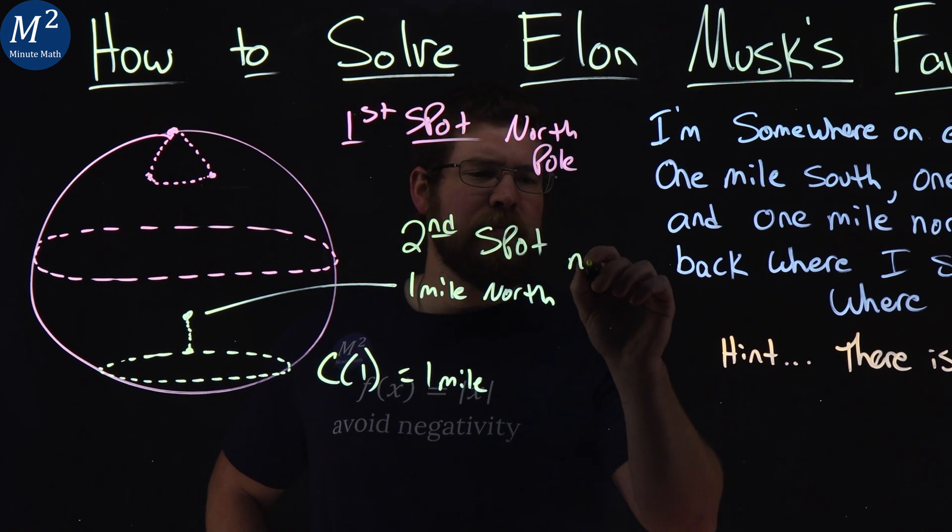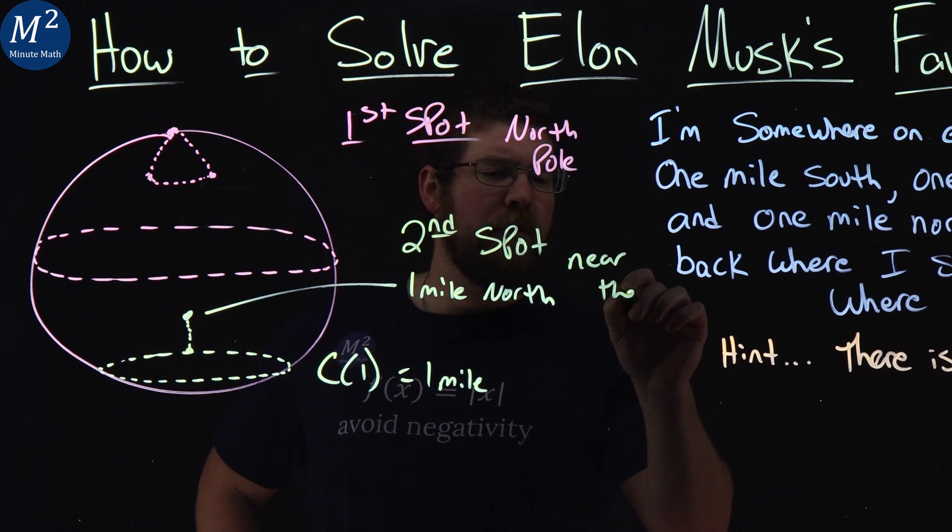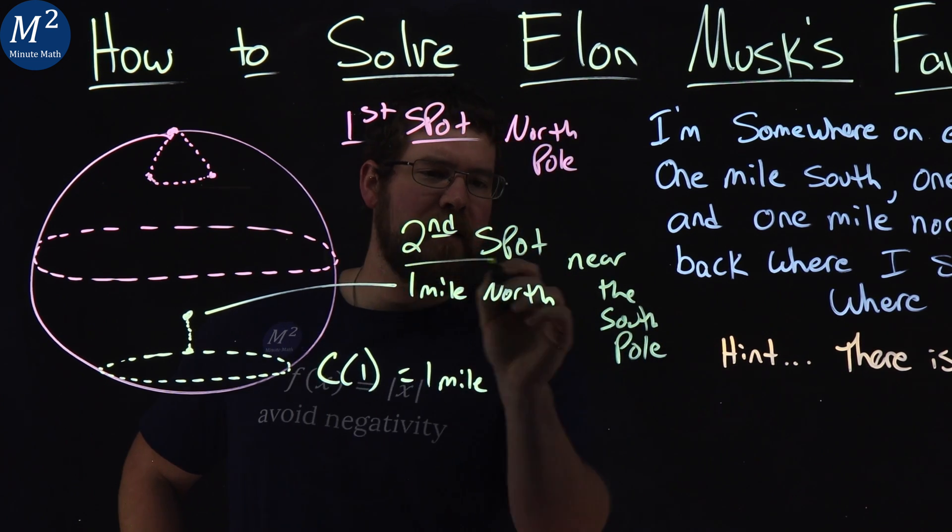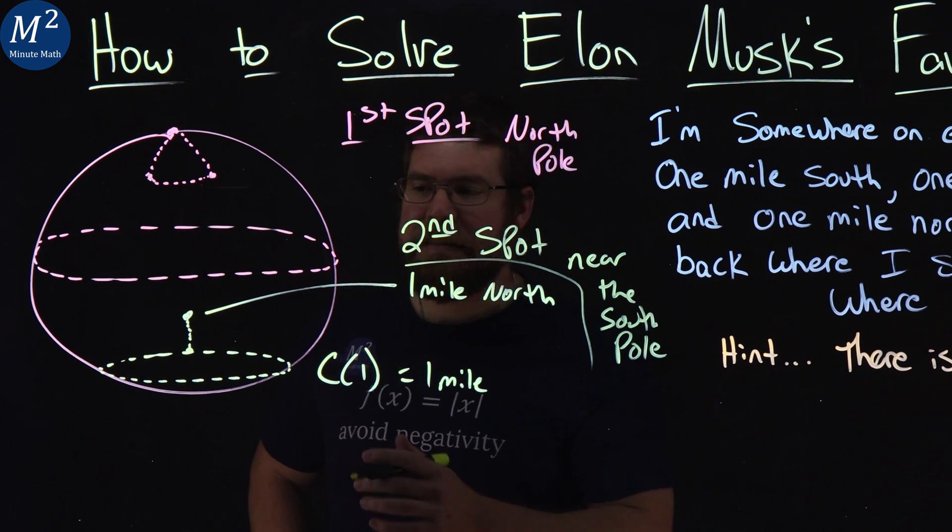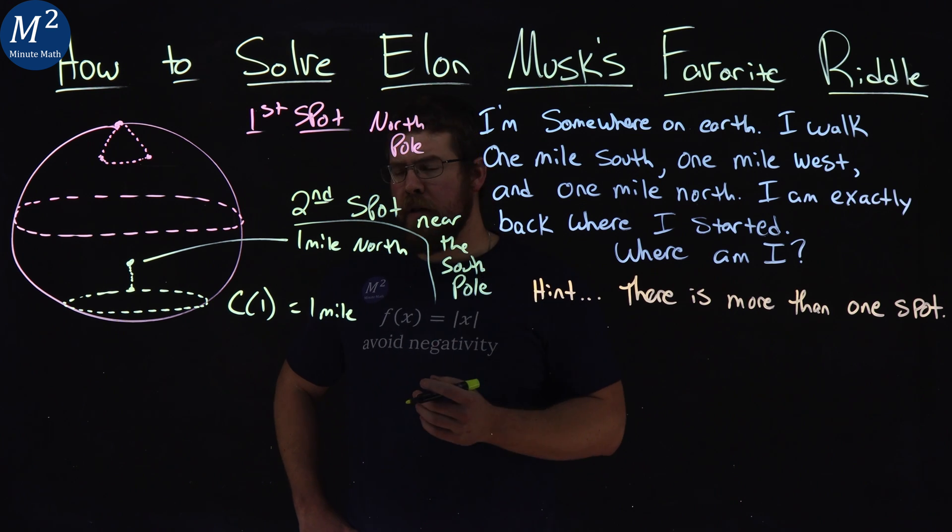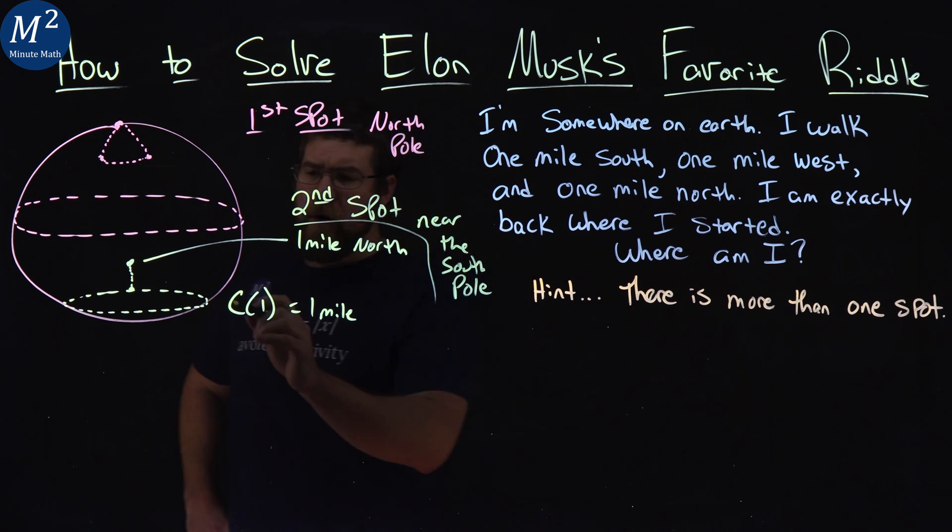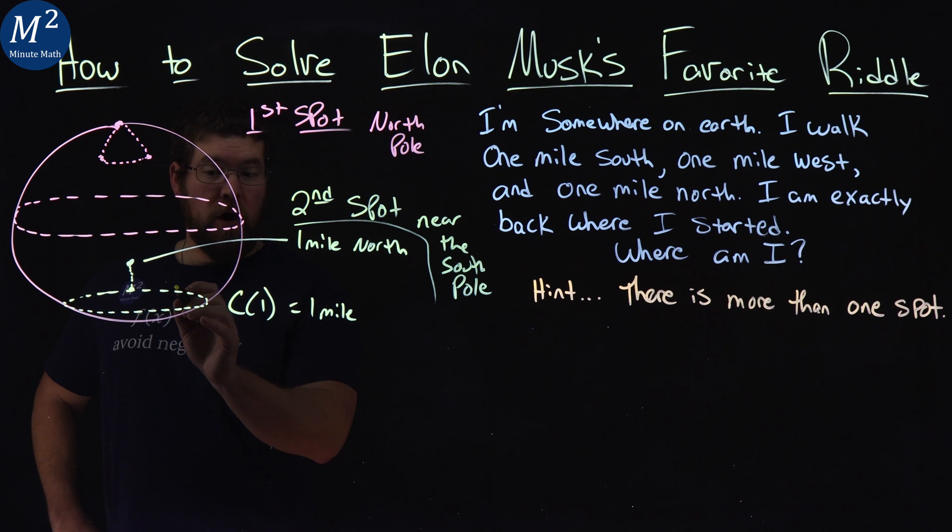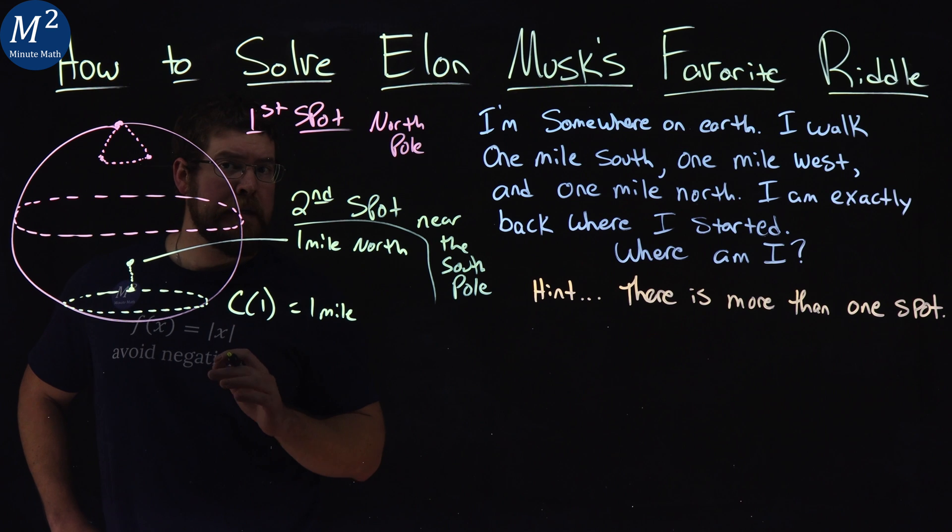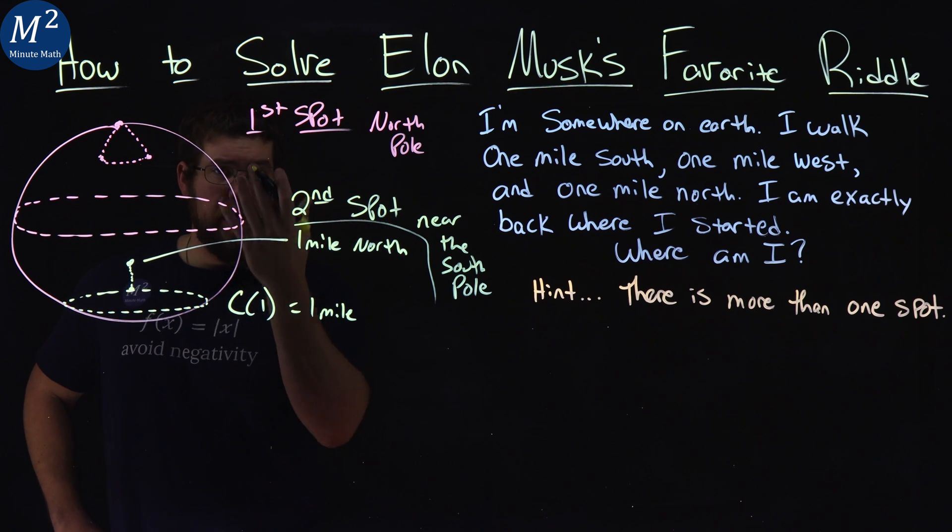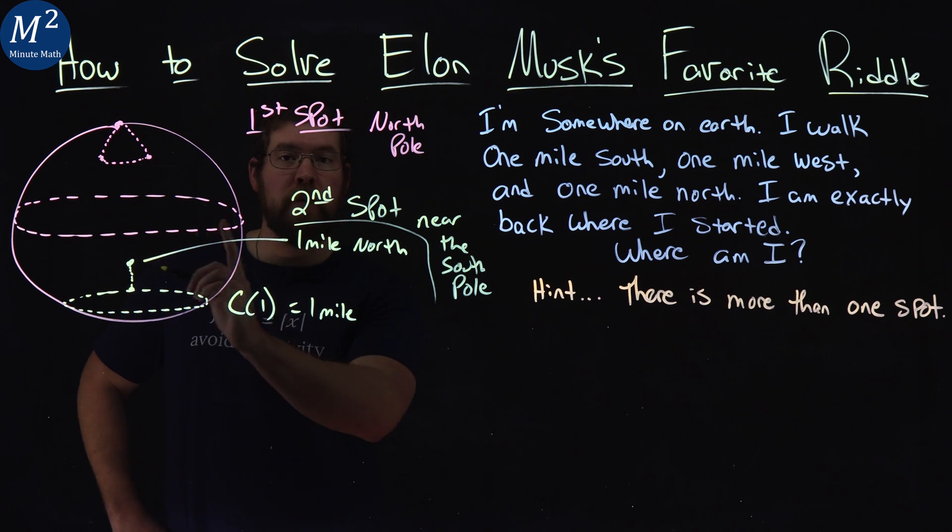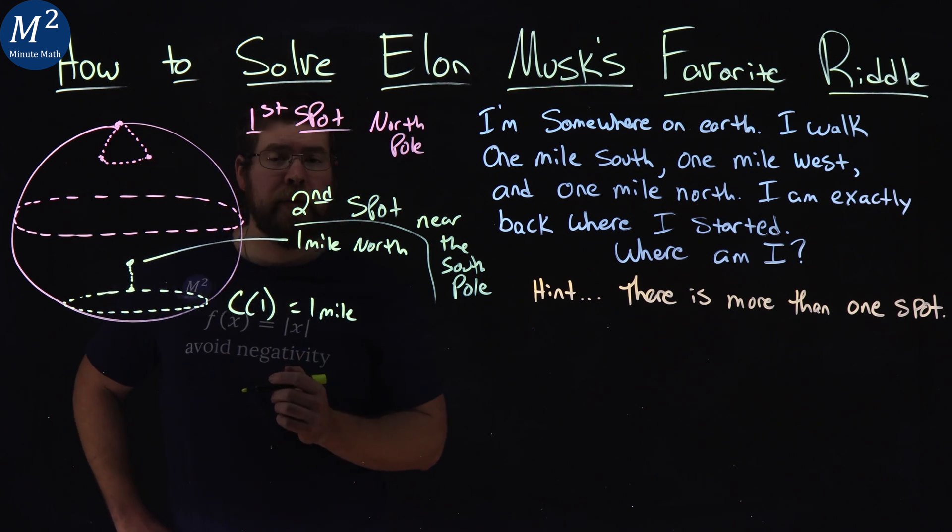And there we have it. This is our second spot, and it's near the South Pole. So hopefully you understand the way I'm writing here. And this actually goes into infinitely many spots. Because in reality, we can pick any spot on this circumference circle that's one mile, and we go one mile north of it, and there's infinitely many spots that this would work. We would go down south, then we would go west one mile, make one complete loop, then we'll go back up north.